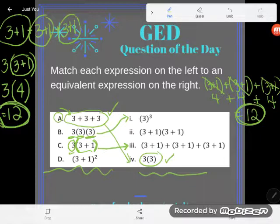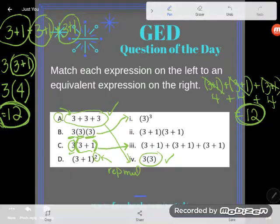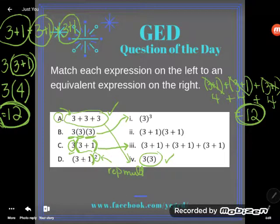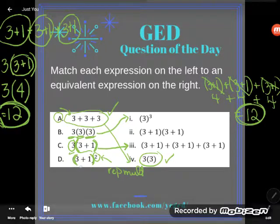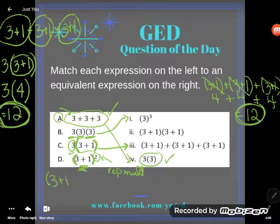So that just leaves D. Looking at the expression on the left, (3 + 1)². Let's remember what exponents mean. Exponents are another way to think about repeated multiplication. Notice how this exponent is outside the parentheses. That means that square is working on this whole thing. This is the same as this whole thing multiplying by itself two times.